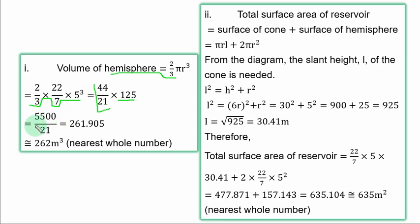If you multiply 44 by 125, you have 5500. Divide by 21, you have 261.905. To the nearest whole number, you consider 261. The next number is more than 5, you round it up to 1 and add it to 261 and you have 262 cubic meters.